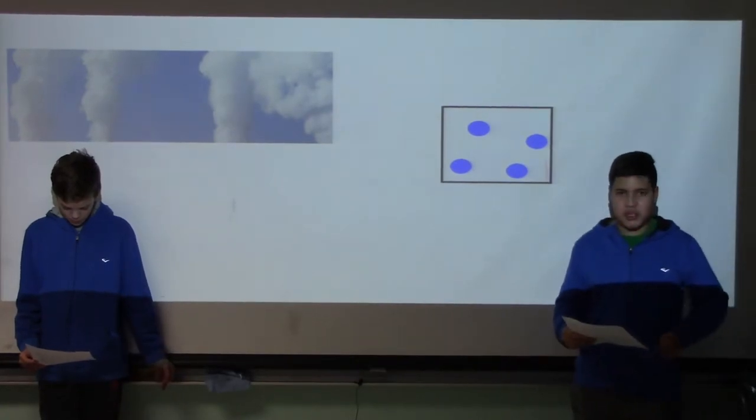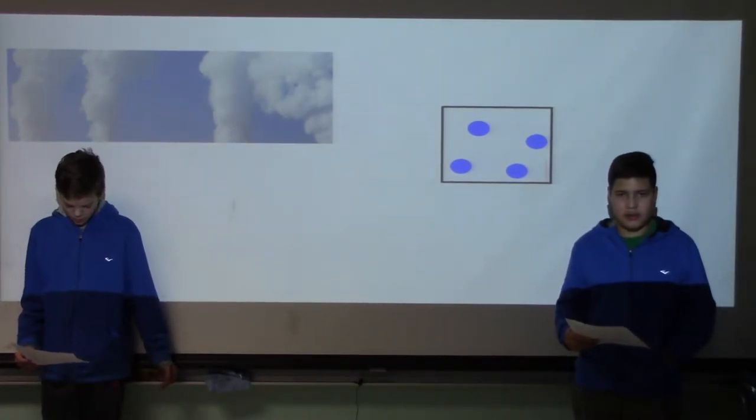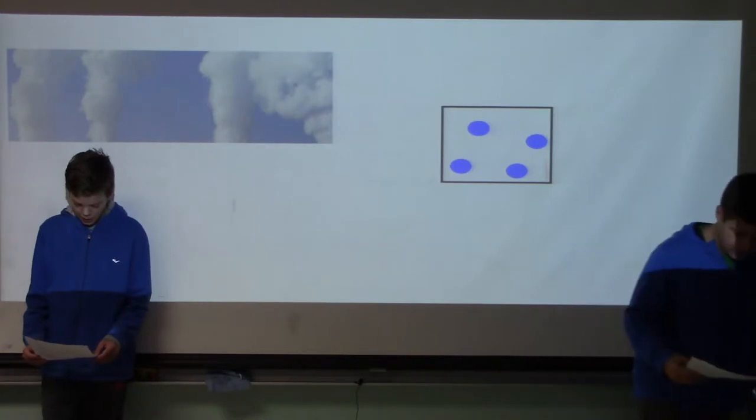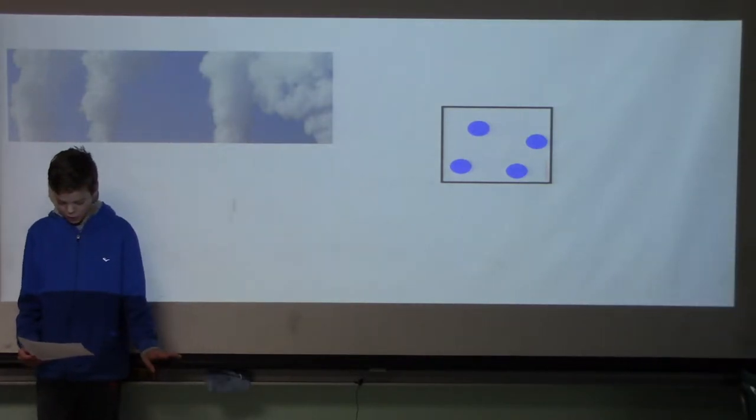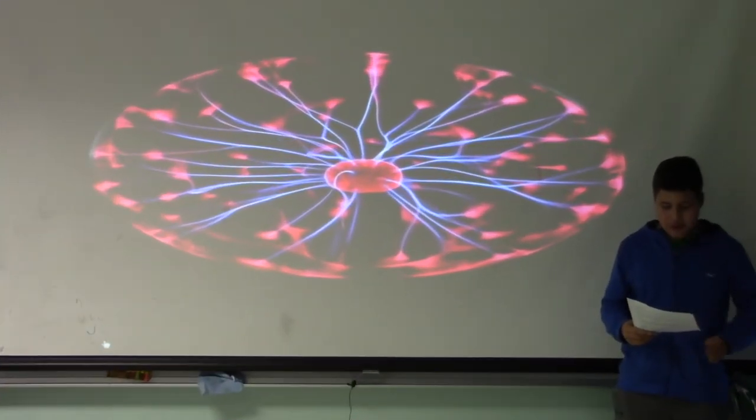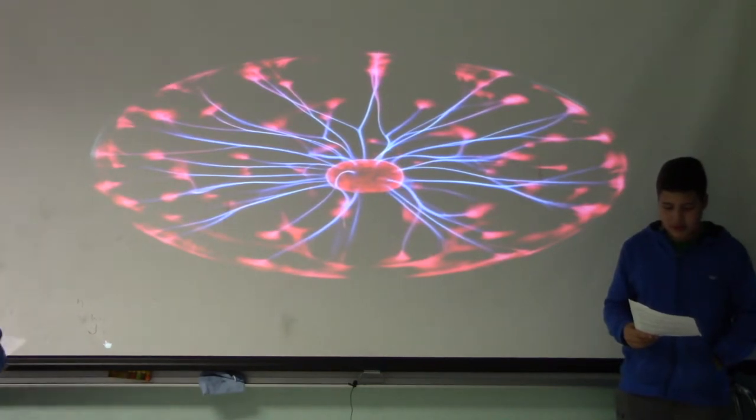The next main state of matter is gases. Gases have no definite shape or volume. Air is an example of a gas. Gases have high energy and a lot of space in between. Helium is another. Those are the three main states of matter.